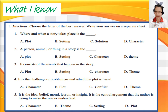For number 3: It consists of the events that happen in the story. The answer is letter A, Plot. Number 4: It is the challenge or problem around which the plot is based. The correct answer is letter C, Conflict. And the last: It is the idea, belief, or the moral lesson — the central argument that the author is trying to make the reader understand. The correct answer is letter B, Theme.